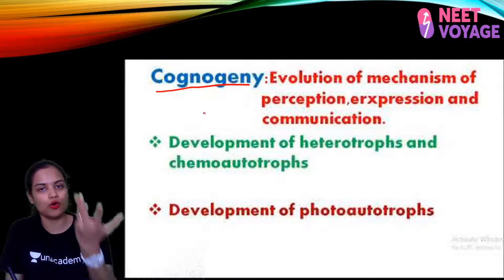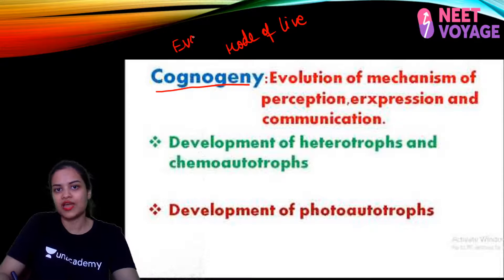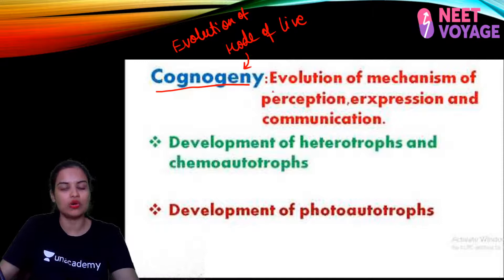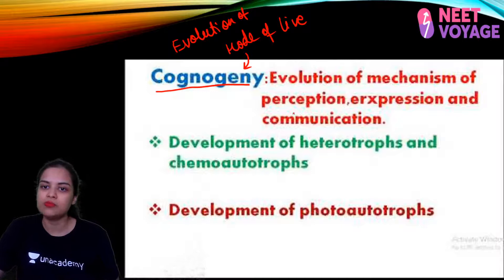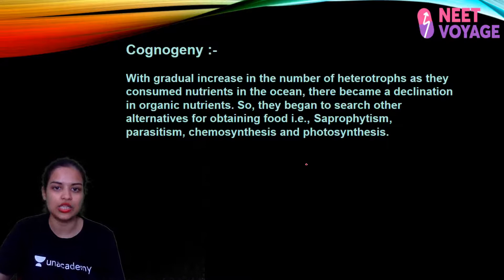This is about your biological evolution. Now we need to study Cognogeny. Biological evolution has given us eukaryotes and prokaryotes. Now what was their mode of nutrition, what was their mode of life? The evolution of mode of life — that is called your Cognogeny. Cognogeny is the evolution of mechanism of perception, expression, and communication — how living organisms perceived and interacted with their environment.